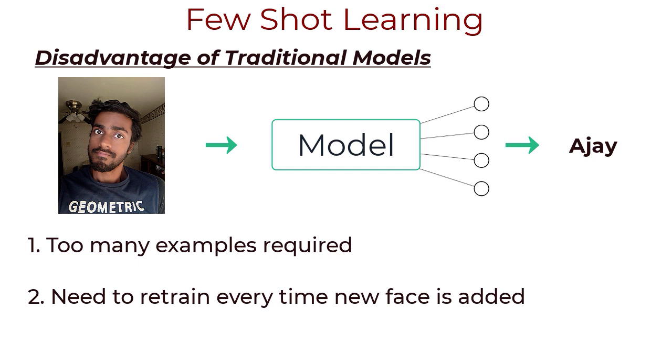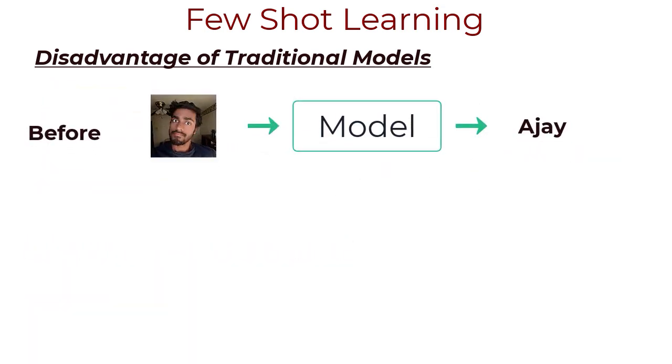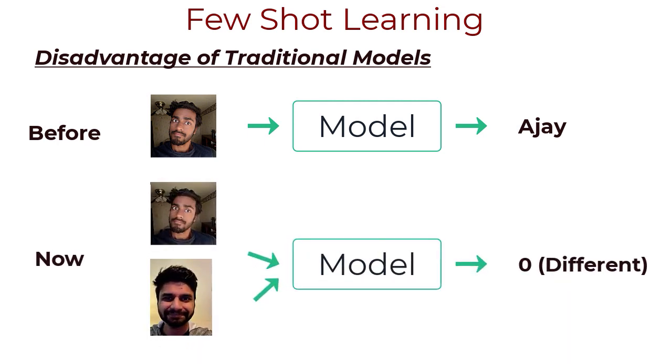Now, to solve for both of these disadvantages, we transform the problem that the model is solving. Instead of providing an image and telling the network to figure out who it is, we can give the network two images and tell the network to determine if the images are of the same person or of different people. To this model, we can then inject prior knowledge while training. I'll definitely get into this prior shortly, but the point I'm trying to make here is to show you how this new setup overcomes both disadvantages of the traditional approach.